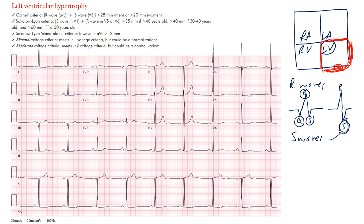There's the Cornell criteria, the Sokolow-Lyon criteria, and a standalone criteria, among many others. The Cornell criteria looks at the R wave in AVL plus the S wave in V3, and it is gender-specific. In men, if it's at least 28 millimeters in amplitude that meets criteria; in women, over 20 millimeters meets criteria. Looking at lead AVL, the amplitude appears to be about 12 millimeters.